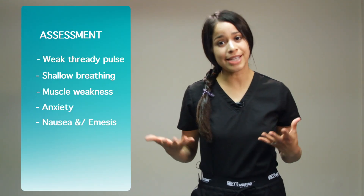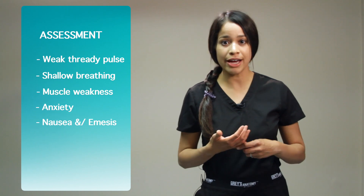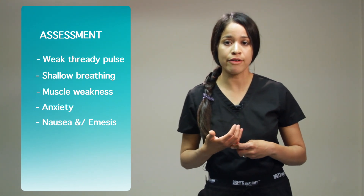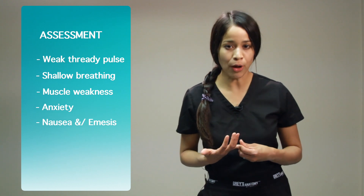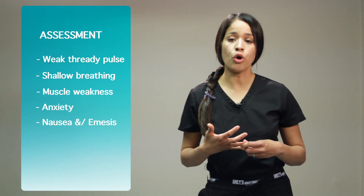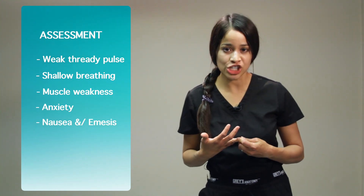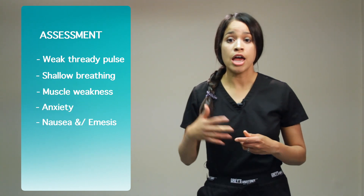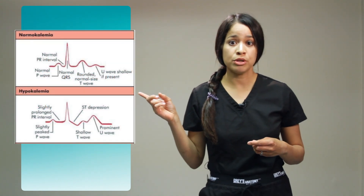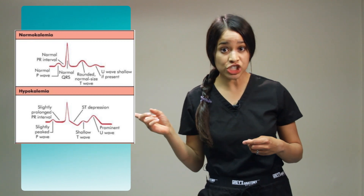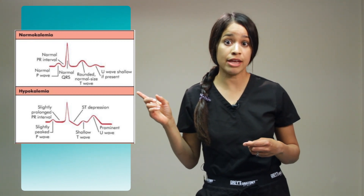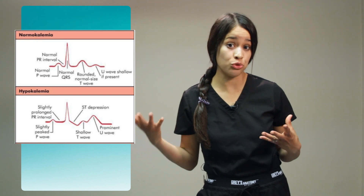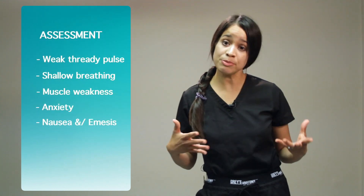Moving on to assessment findings. For cardiovascular, this is your patient that is going to have a weak, thready pulse. They can have orthostatic hypotension and dysrhythmias. If you look to the side, you can also see ST depression and T wave inversion, or a peaked U wave as well.